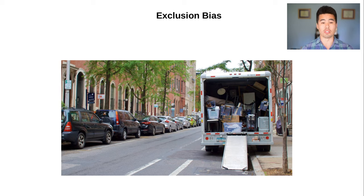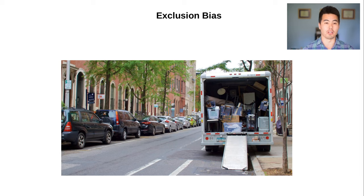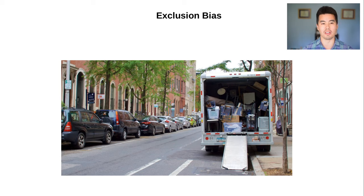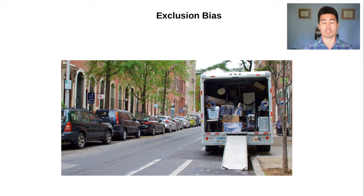We don't typically worry as much about people leaving a study or dropping out, though in some cases it's really important. In a medical clinical trial, for example, health effects could be correlated with people having to drop out of studies. When thinking about physical moving, if we have a representative sample at the beginning, we can sometimes assume people will randomly choose to move elsewhere — but depending on what we're studying, that may or may not be a good assumption to make.